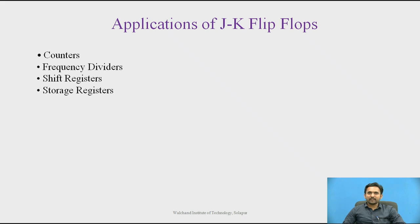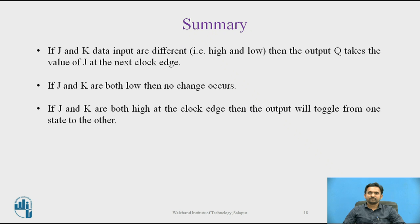Applications of JK flip-flop include counters, frequency dividers, shift registers, and storage registers. If J and K data inputs are different, the output Q takes the value of J at the next clock edge. If J and K are both low, no change occurs. If J and K are both high at the clock edge, the output will toggle from one state to the other.